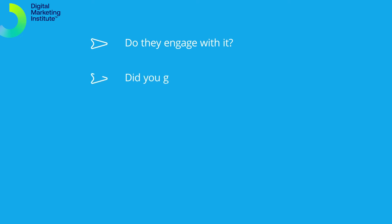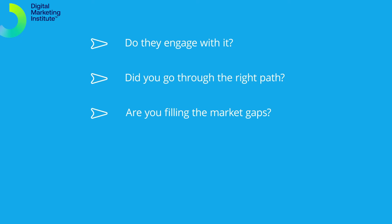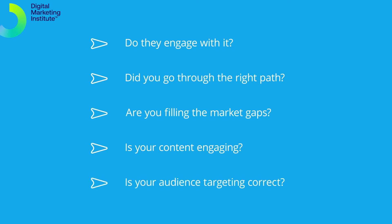In the Iterate stage, ask: Do they engage with it? If they are not engaged, what can you change to make them more engaged? Did you go through the right path? Did you position your product in a way that resonates in the market? Are you filling the market gaps? Is your content engaging? Is it interesting enough? Is your audience targeting correct? Are your keyword choices driving the desired action from the audience? Once you've done all this testing, you can begin to improve by doing more of what worked and pulling back on what didn't work, with a view to producing a refined campaign.